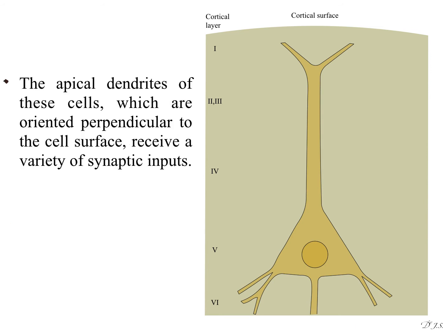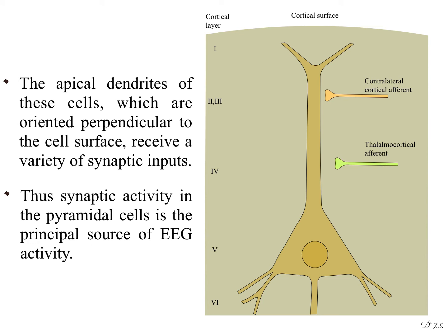The apical dendrites of these cells, which are oriented perpendicular to the cell surface, receive a variety of synaptic inputs. Thus synaptic activity in the pyramidal cells is the principal source of EEG activity.